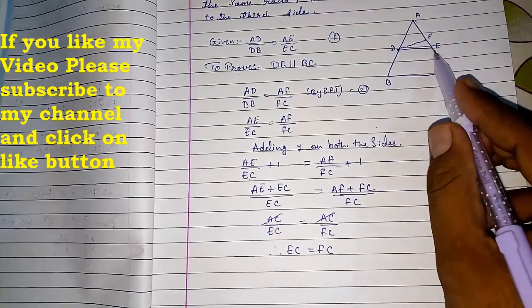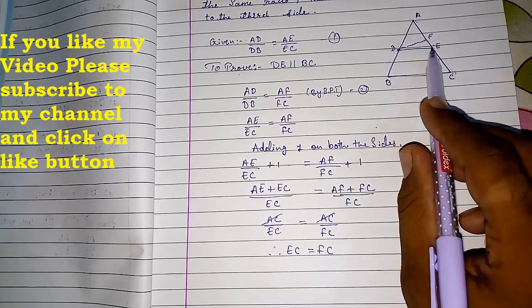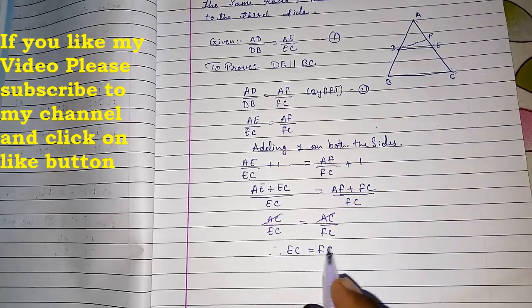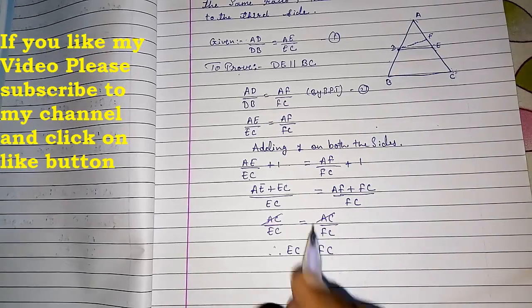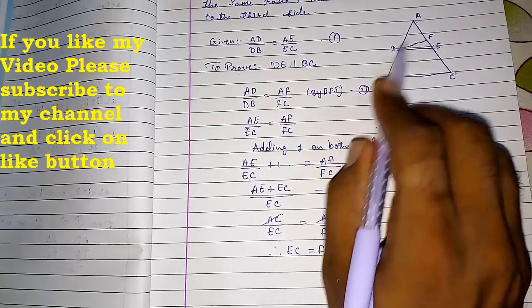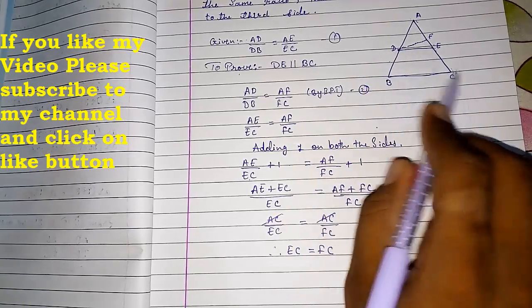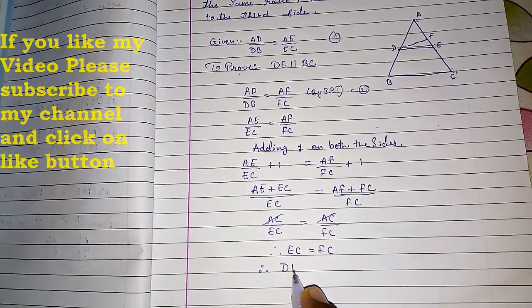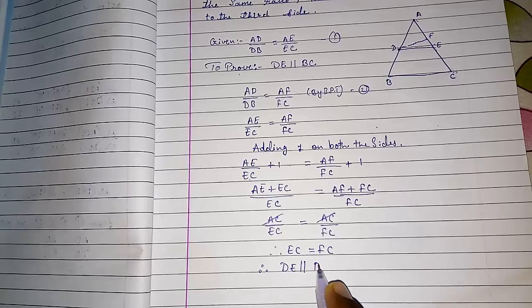Now EC and FC both are equal. So we can say EC and FC are equal, so E and F are the same point. So directly if we say that E and F are the same point, and we had supposed DF parallel to BC, so directly we can say therefore DE parallel to BC.